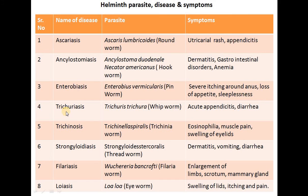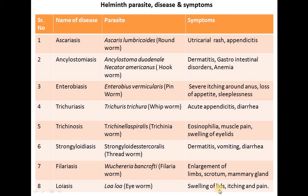Trichuriasis is caused by Trichuris trichiura (whipworm); symptoms are acute appendicitis and diarrhea. Trichinellosis is caused by Trichinella spiralis; symptoms are eosinophilia, muscle pain and swelling of eyelids. Strongyloidiasis, caused by Strongyloides (threadworm), presents with dermatitis, vomiting and diarrhea. Filariasis is caused by the filarial worm Wuchereria bancrofti; symptoms are enlargement of limbs, scrotum and mammary glands. Loiasis is caused by Loa loa (eye worm) and causes swelling of eyelids, itching and pain.